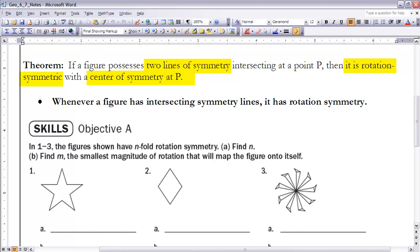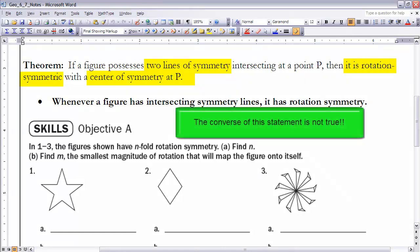In other words, if it is reflection symmetric and there are at least two lines of symmetry that intersect, then we'd say it's also rotation symmetric, and the center of that rotation would be that point P where the two or more lines intersect. Whenever a figure has intersecting symmetry lines, it has rotation symmetry as well.